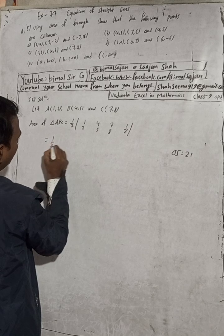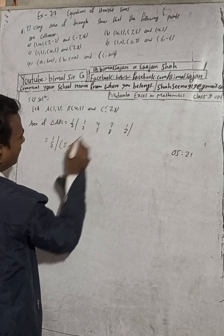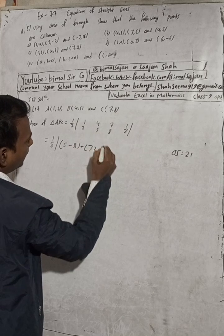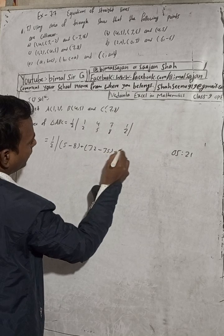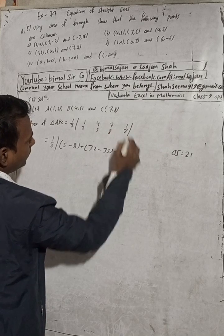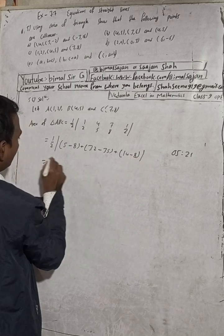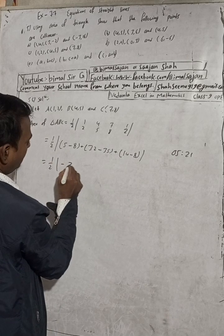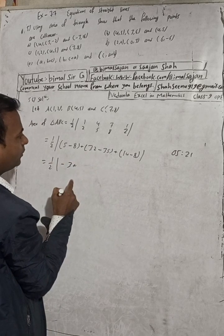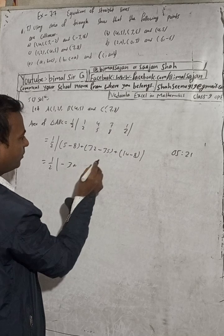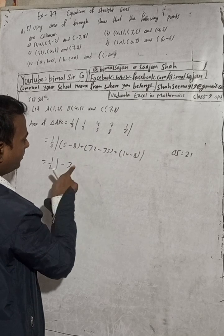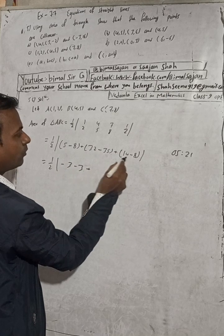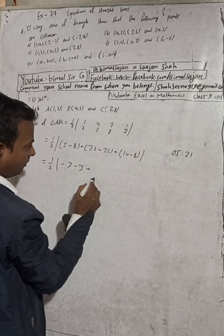This equals 1/2 times: 5 over 5 minus 4 times 8 plus 8 over 32 minus 6 over 7 times 35, plus 7 times 14 minus 8 over 8. That gives 1/2 times: 5 minus 8 is minus 3, plus 32 minus 35 is minus 3, and 14 minus 8 is 6. So we have minus 3, minus 3, plus 6.